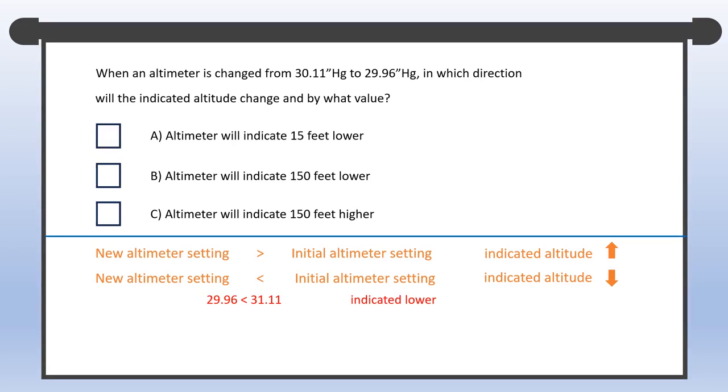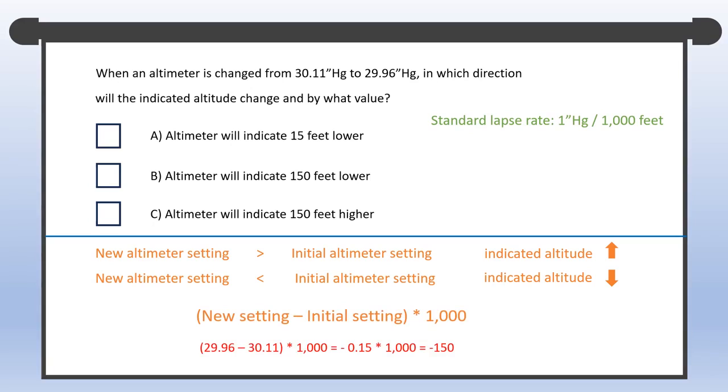The calculation is a piece of cake if you keep the standard lapse rate in mind. Subtract the initial setting from the new one, then multiply by 1000. The result is 150. That negative sign is a reminder that the new reading is lower. If you keep them in right sequence, it's just a twist of the standard lapse rate. And here comes B taking the spotlight. The altimeter will read 150 feet lower.